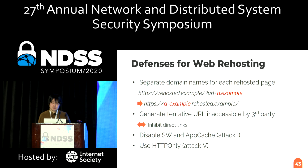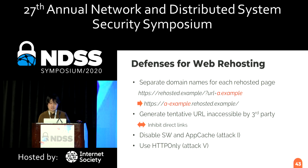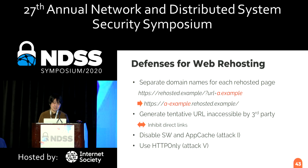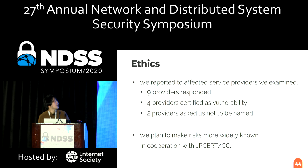I present feasible defenses for web rehosting. A straightforward solution would be to generate a different subdomain for each rehosted website. A major drawback of this solution is that already generated URLs, which may be referenced from elsewhere, will become invalid. We described other options for possible mitigations for web rehosting services and users in the paper. Based on our consideration, we reported the findings to the affected service providers, and we also plan to publish web articles making the risks and defenses more widely known in cooperation with JPCERT/CC.